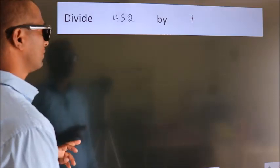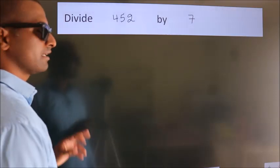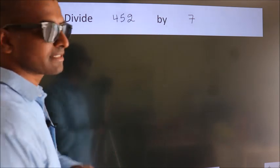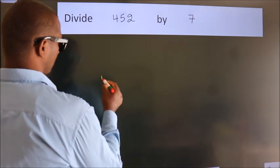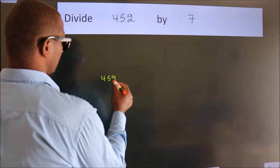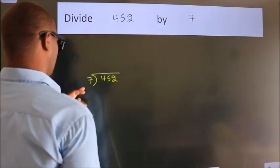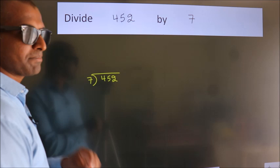Divide 452 by 7. To do this division, we should frame it in this way: 452 here, 7 here. This is your step 1.